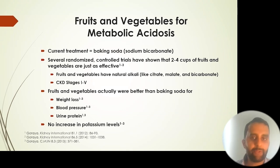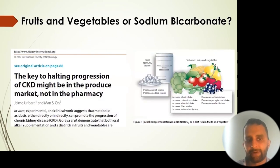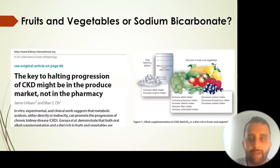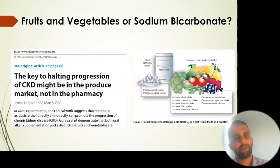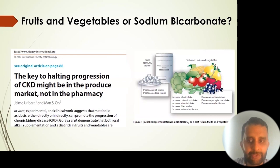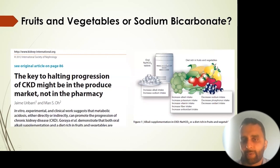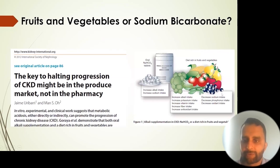Despite these foods being plants, there was no increase in potassium levels. After some of these studies were published, an editorial was written stating that the key to halting the progression of kidney disease might be in a produce market, not a pharmacy. The comparison shows that pills have really one benefit — increasing alkali intake — but they also carry a sodium load. Eating natural alkali in the form of fruits and vegetables gives all the other benefits without that added sodium load.